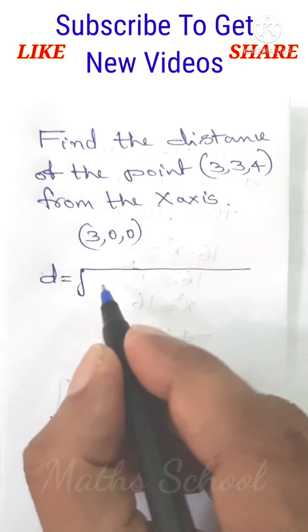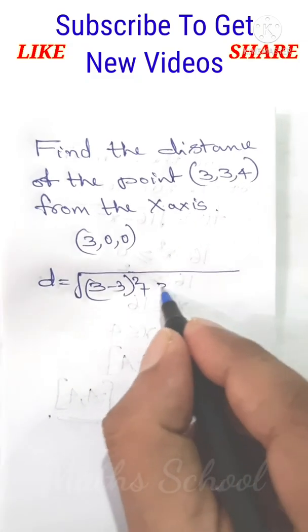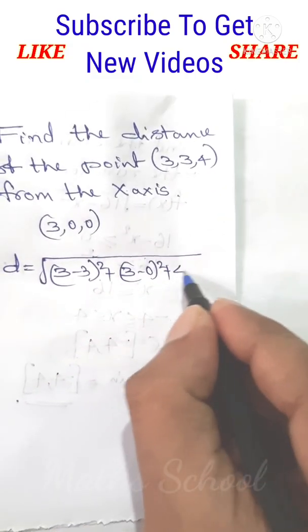That is 3 minus 3 the whole square plus 3 minus 0 the whole square plus 4 minus 0 the whole square.